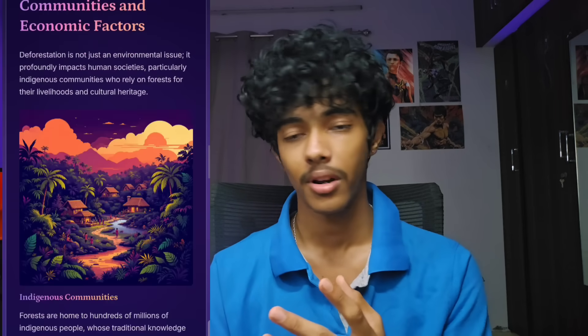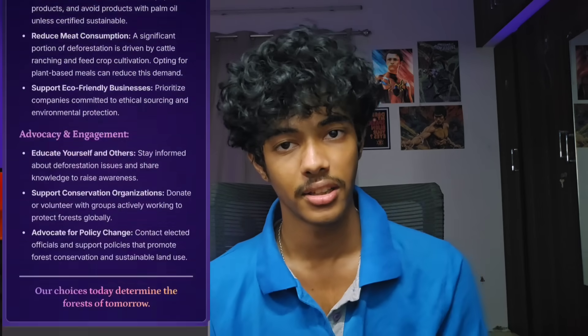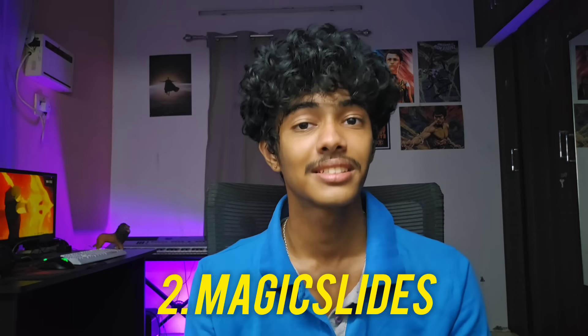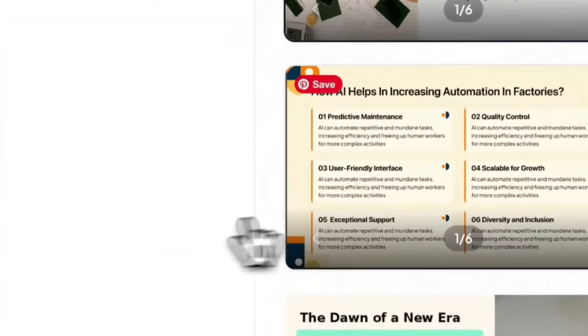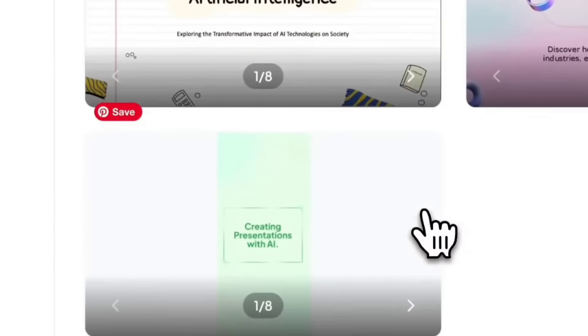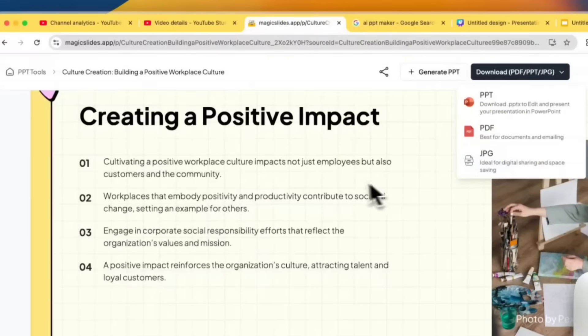The most common tool students use for PPT is Gamma AI. There is also Magic Slides — you can use a YouTube video to generate a PPT. If you want the best output, Magic Slides is better than Gamma AI. But if you want something fast and visually appealing, Gamma AI is better.